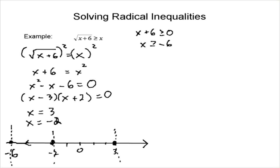Now once we have our boundaries established, we have to test points that lie in between these boundary points. We need to test values between each pair of boundary points. When testing, we can choose whatever number we like as long as it falls within that boundary region. We also want to choose numbers that make the math easy — there's no point in choosing a number that makes the math difficult.